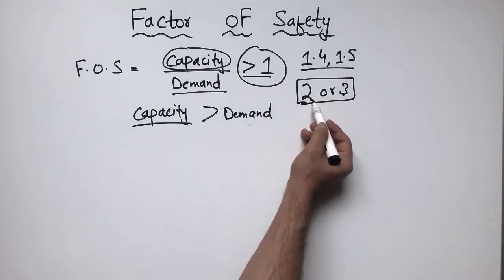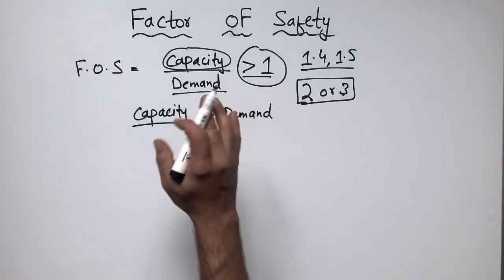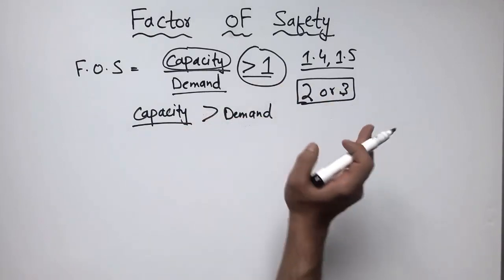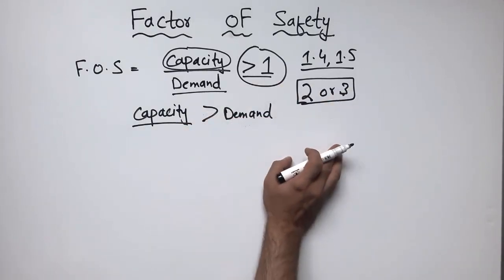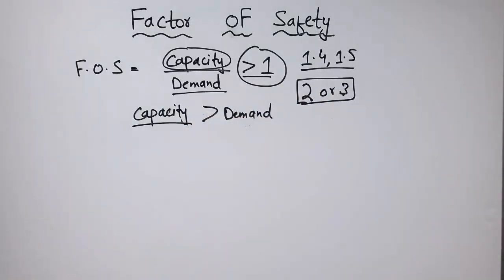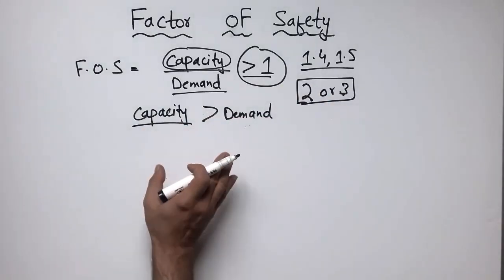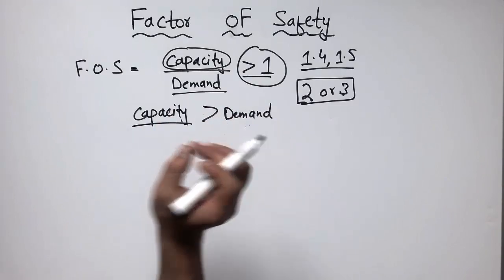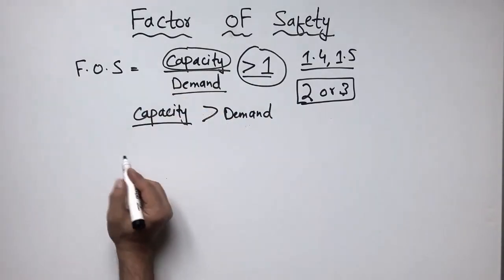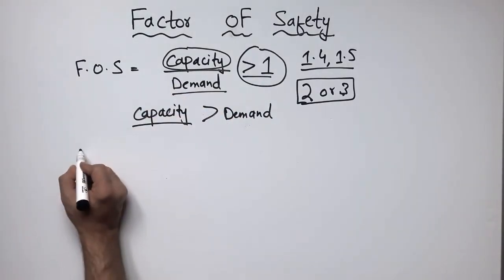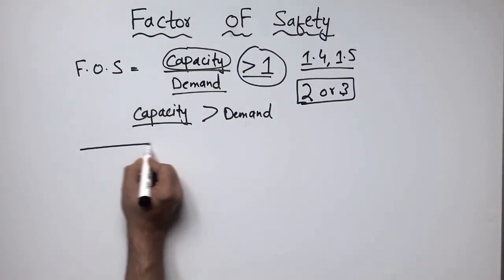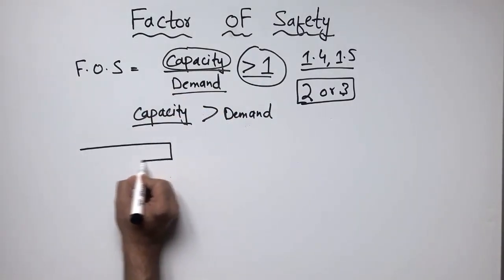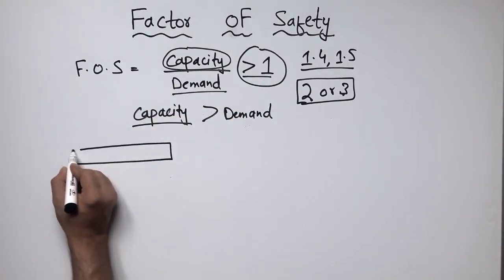The higher the factor of safety value, the higher the capacity of your structure. However, a high factor of safety also makes your structure more uneconomical. I will explain this with a simple example.